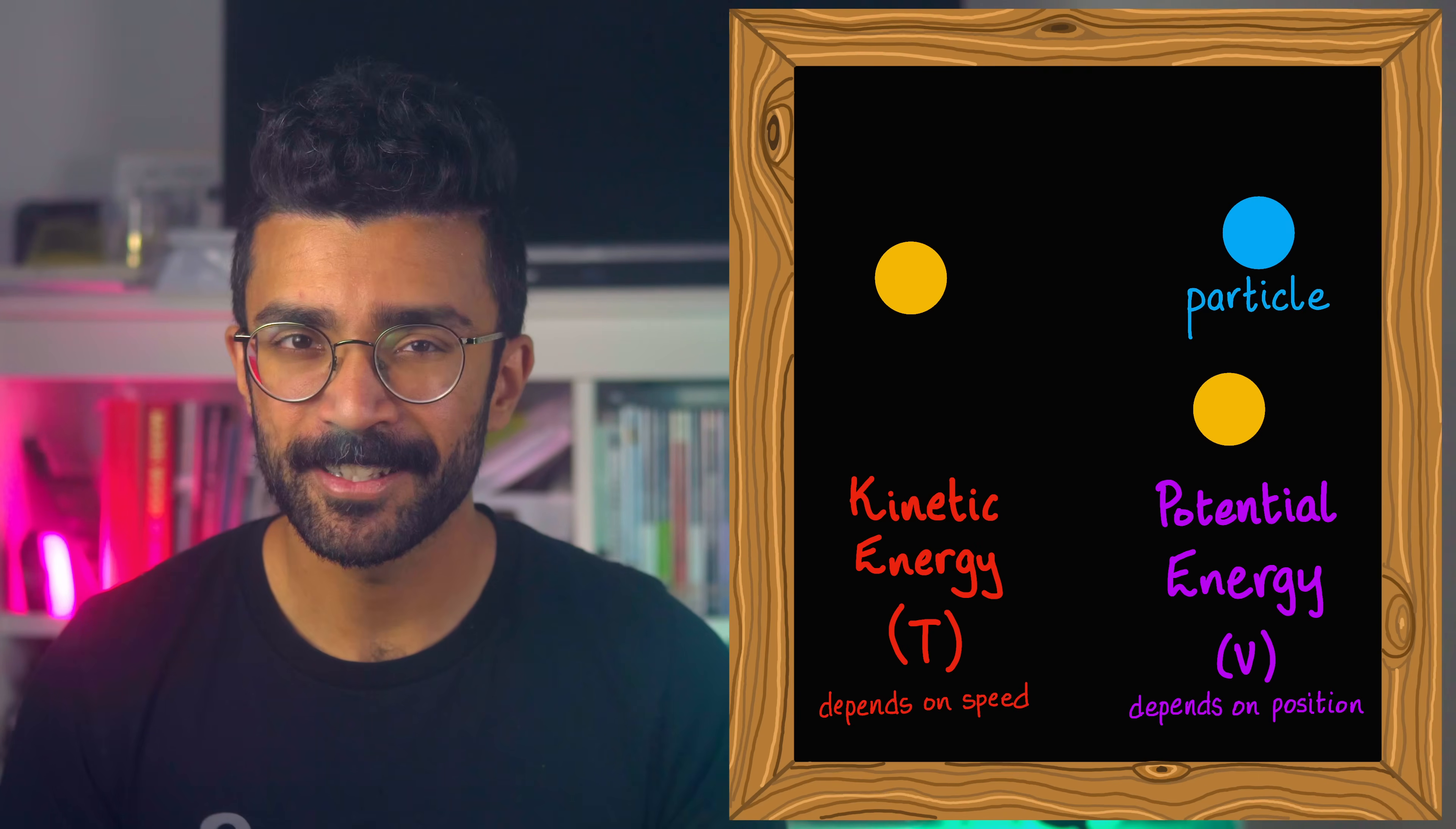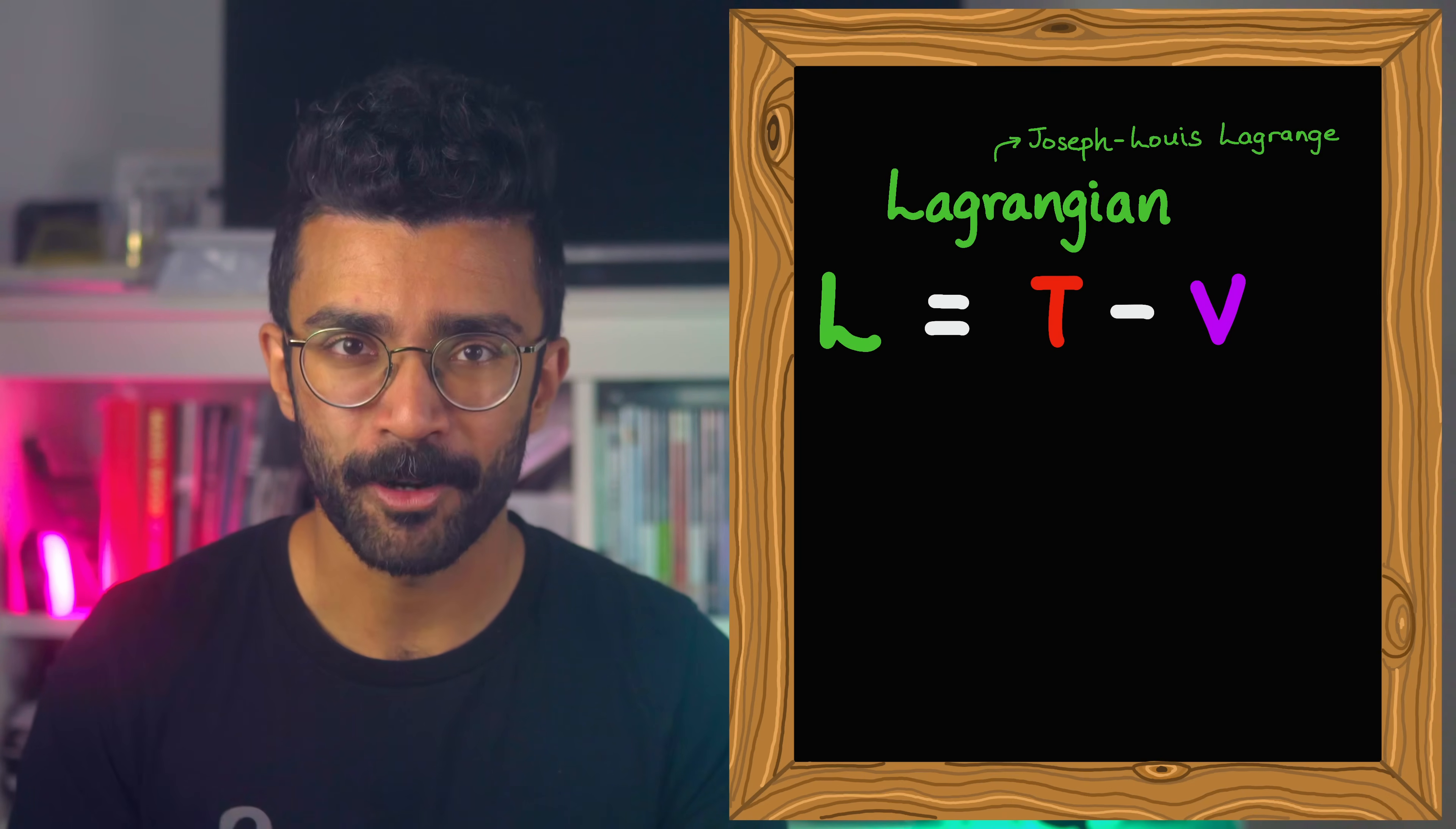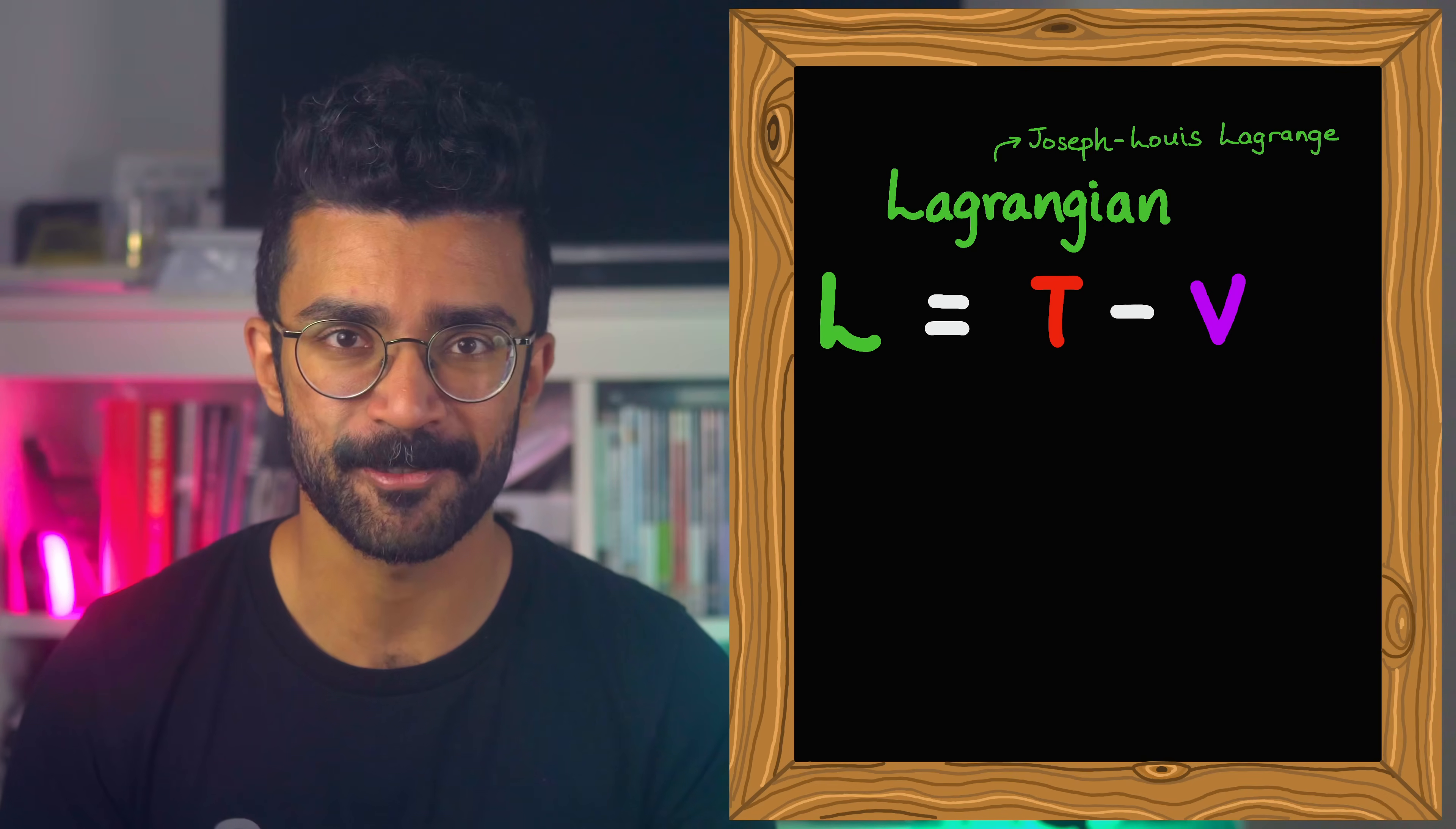Next, we're going to calculate a quantity called the system's Lagrangian, named after Joseph-Louis Lagrange. For a simple system like this, it's just the kinetic energy minus the potential energy. Yeah, minus. This Lagrangian is a surprisingly useful quantity. I've made a whole video about Lagrangian mechanics that's very related to what we're talking about in this video, so check it out up here if you're interested. I'll also leave a link in the description.